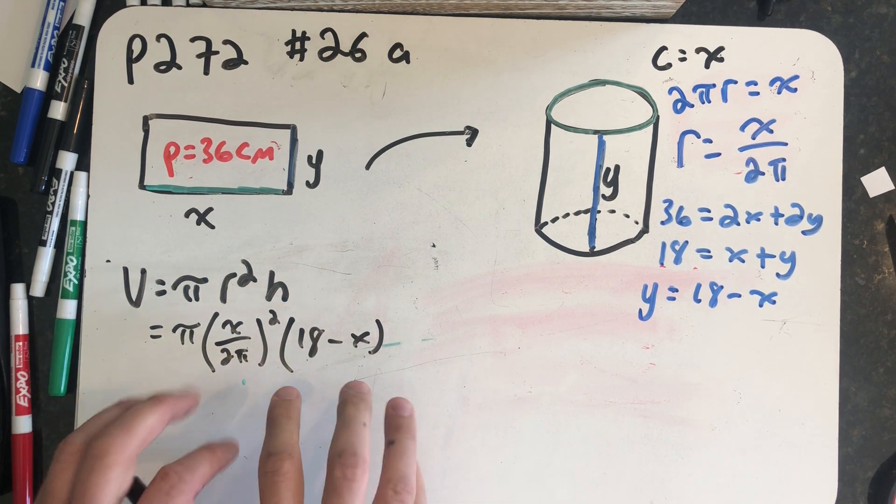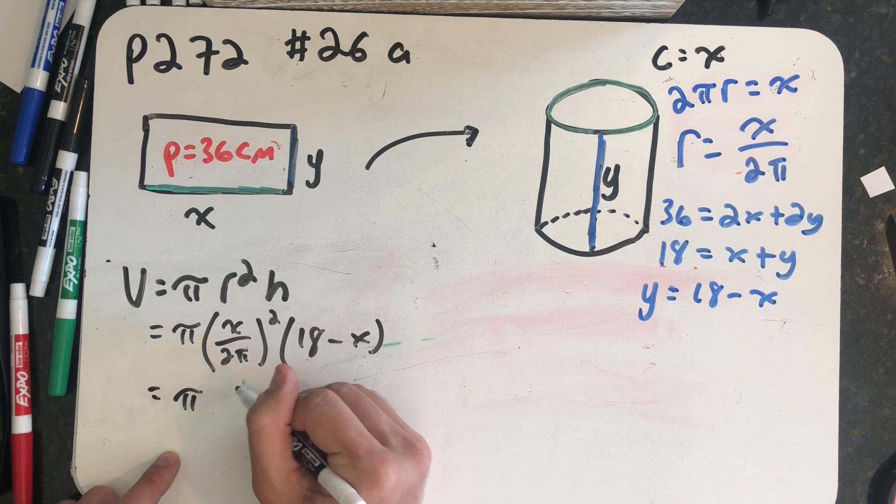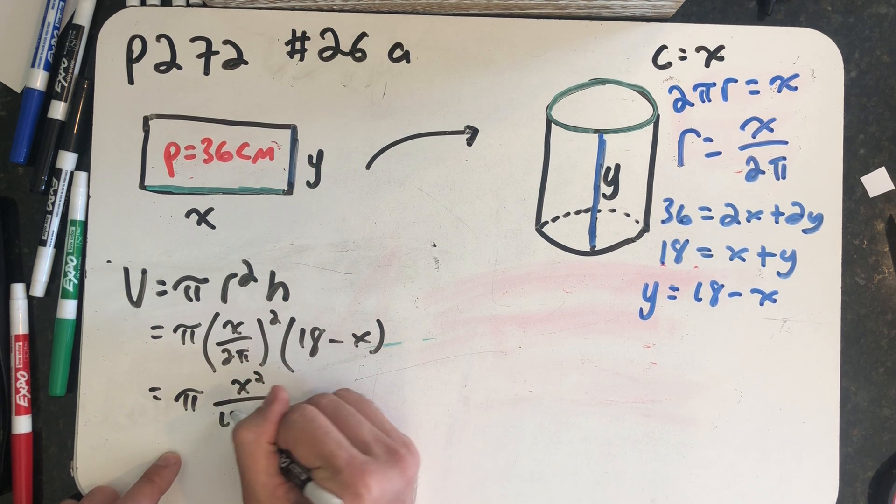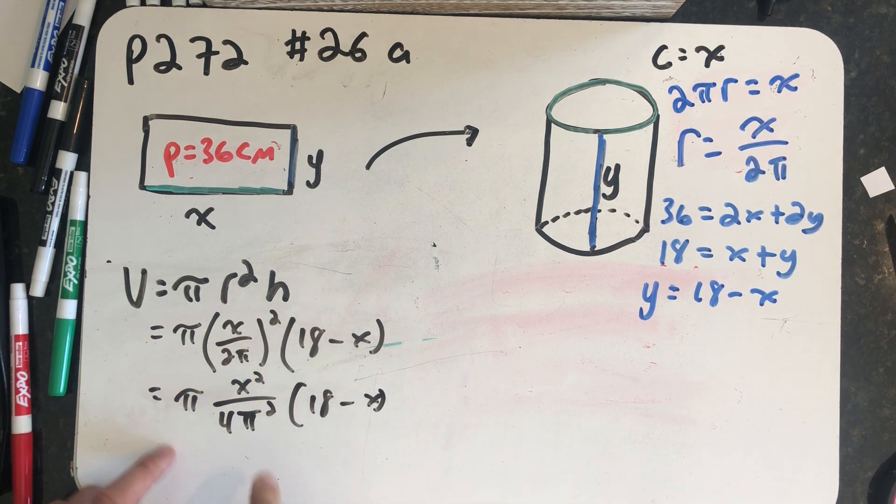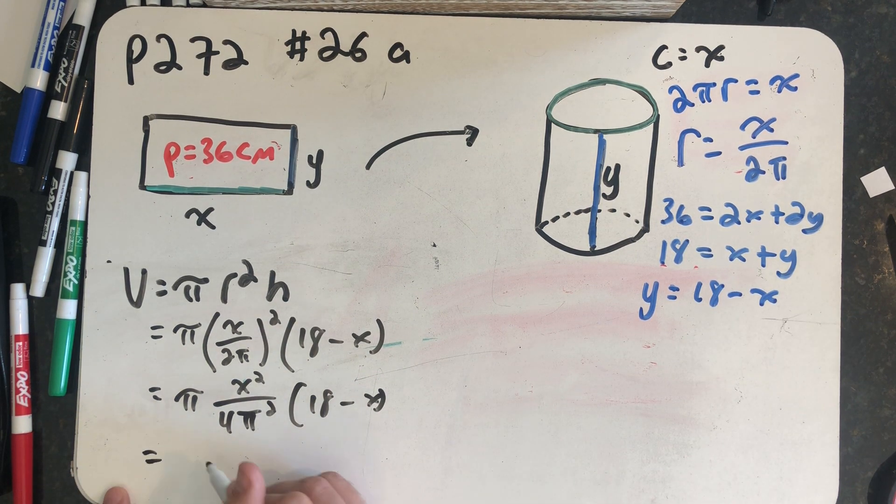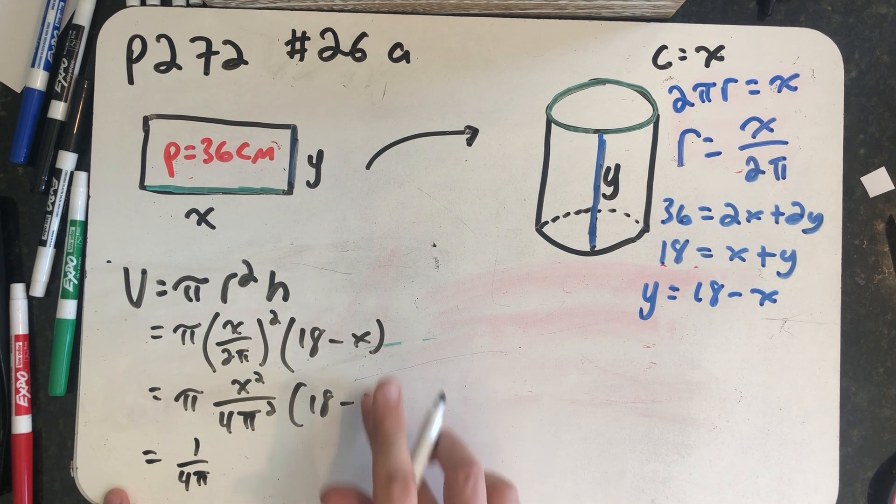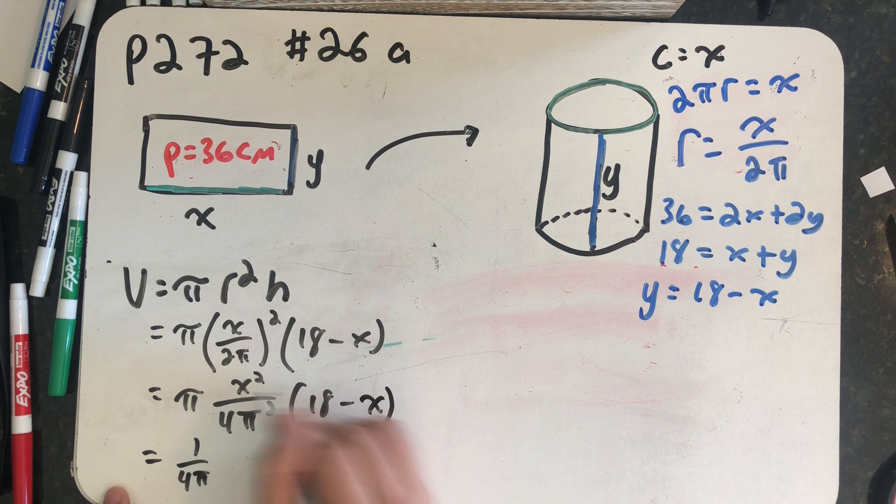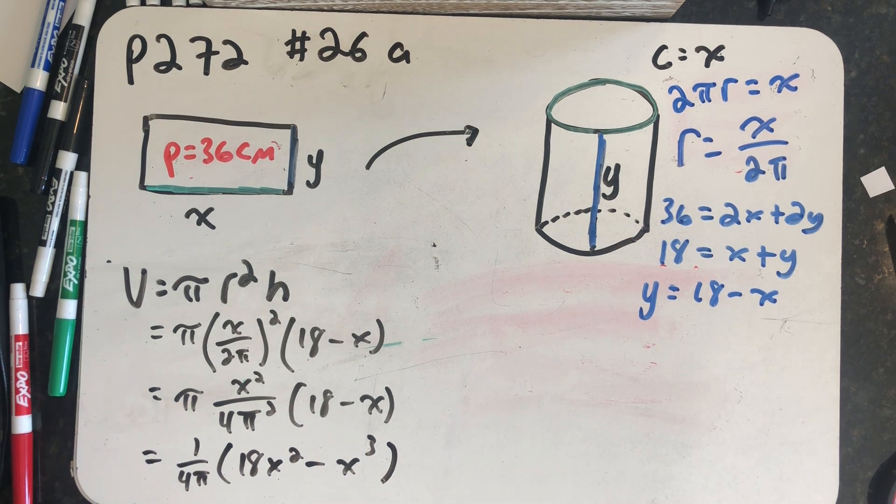So here is my volume function. Let's simplify this a little bit. One of the π's cancels. I'm going to write that coefficient out front, 1 over 4π. And let's distribute the x squared through my parentheses. So 18x squared minus x cubed is my volume function.